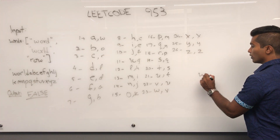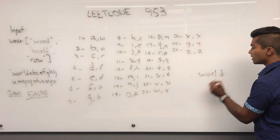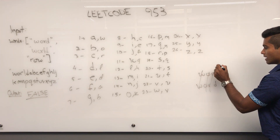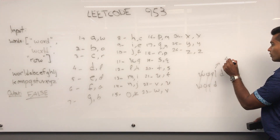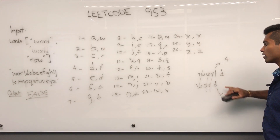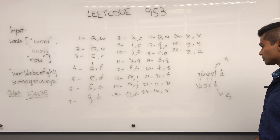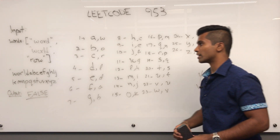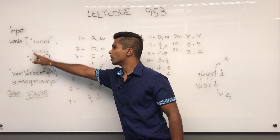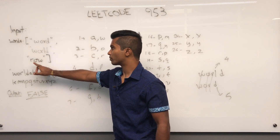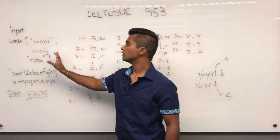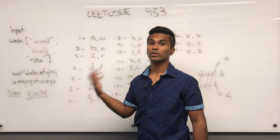If we had 'world' before 'word', this would return true because the first three letters are the same, and then L has priority four while D has priority five, so 'world' before 'word' is in order. Then comparing 'world' and 'row', W comes before R in the alien language, so that pair is also in order — the whole input returns true.